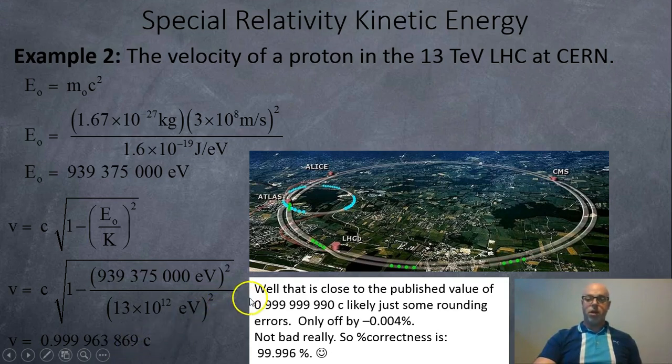Now if you look it up online, it says it was 99.99999990% speed of light. So we're off just a little bit, almost the same. If you calculate the percentage error, we're off by negative 0.004%, which means we're 99.996% correct. Pretty good. I'll take that.